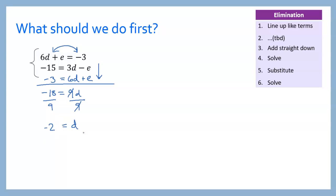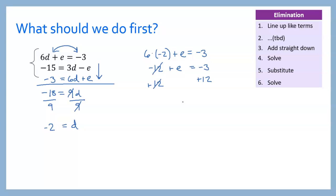We take this negative 2 value and plug it back into one of the original equations — let's do the first one since it has fewer negatives. 6 times negative 2 plus e equals negative 3. 6 times negative 2 is negative 12. Our last step is the inverse operation: we're adding negative 12, so we add positive 12 to both sides. The 12s cancel and we get e equals negative 3 plus 12, which is 9. Written as a coordinate pair d, e: negative 2, 9.